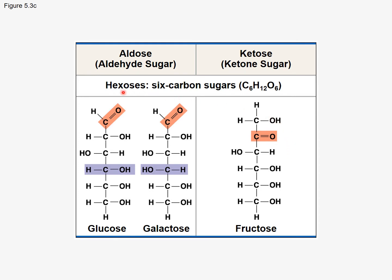Hexoses are six-carbon sugars — you can see there are six carbons in the backbone — and they can exist as an aldose or a ketose. These are two examples of aldoses that happen to be hexoses because they have six carbons in their skeleton. They also have the aldehyde functional group, as opposed to fructose, which has the ketone functional group. If we look on the left, we have glucose and galactose, which are very similar in structure.